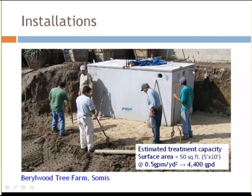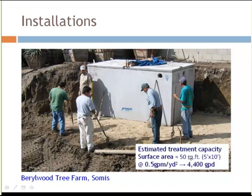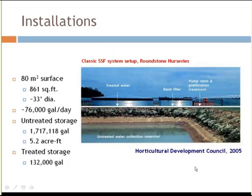Here's a typical system installed in Southern California — the containment can be anything, in this case a septic tank. I estimated the surface bed of this septic tank at about 50 square feet, so it could treat about 4,400 gallons per day. This is a larger system in the UK — the containment for the sand filter is estimated at about 33 feet in diameter and has the capacity to treat about 76,000 gallons per day, with the treated water contained in a protected storage container.